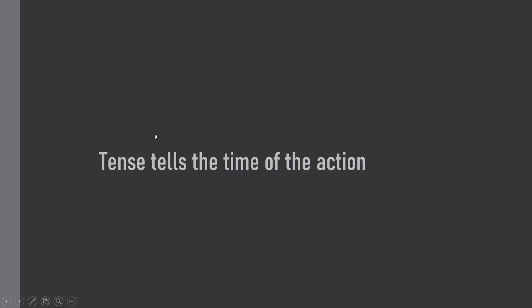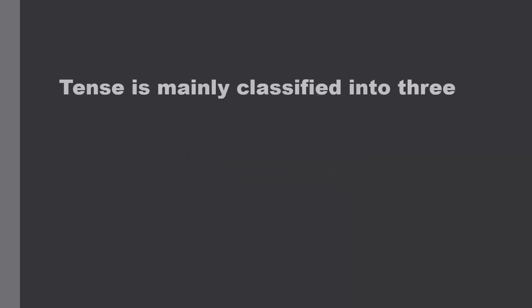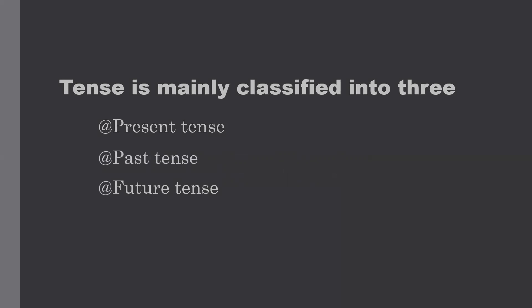What do you mean by tense? It's simple — tense tells the time of the action. Tense explains whether the action happened, is happening, or will happen. Tenses are classified mainly into three: present tense, past tense, and future tense.